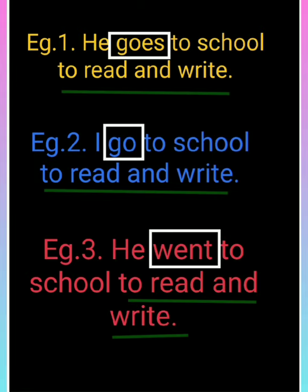Let us discuss the first verb: 'goes' in 'he goes to school' — simple present tense. Agar hum subject ko badle, 'he' ki jagah 'I' karein, toh kya 'goes' rahega? Nahi, yeh apne aap ko badal dega. Aap dekhiye, agar aap subject ka person badle — third person se first person karein — toh 'goes' nahi likh sakte, aapko likhna hoga: 'I go to school to read and write.' Toh jaise hi subject ka person badla, 'goes' ne apne aap ko bhi badal liya.